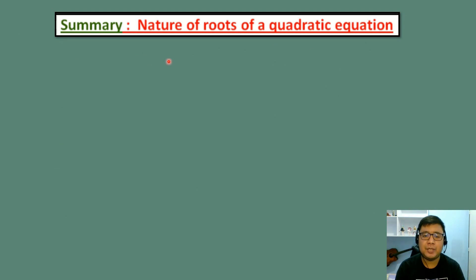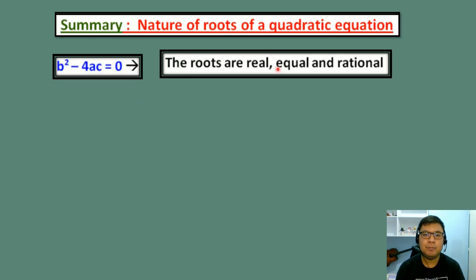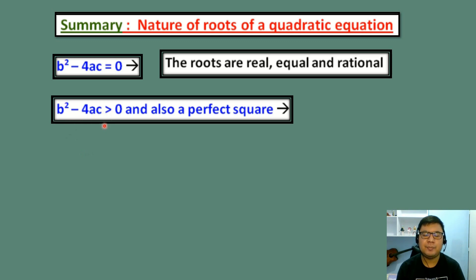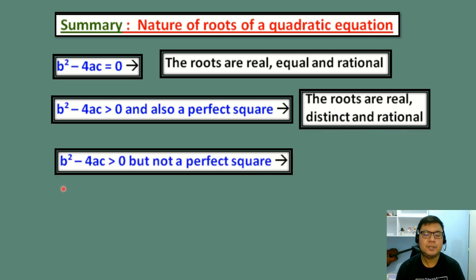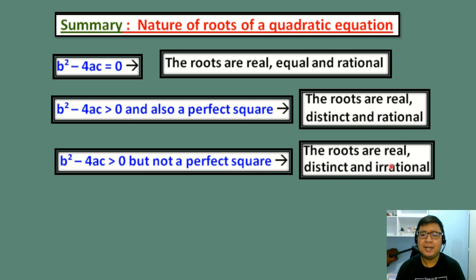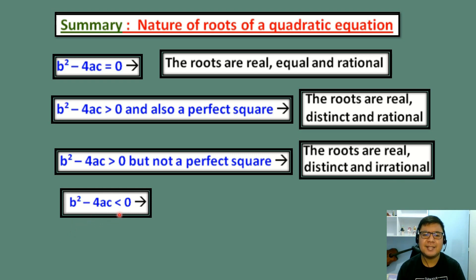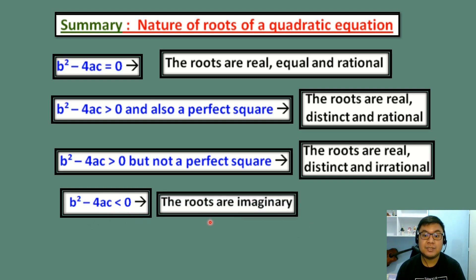To sum up the nature of roots of a quadratic equation: if the discriminant equals 0, the roots are real, equal, and rational (one solution). If the discriminant is greater than 0 and a perfect square, the roots are real, distinct, and rational. If greater than 0 but not a perfect square, the roots are real, distinct, and irrational. And if the discriminant is less than 0, the roots are imaginary — no solution.